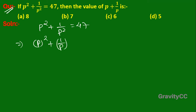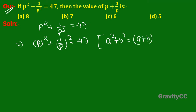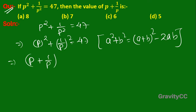We use the identity a squared plus b squared equals a plus b whole square minus 2ab. So p plus 1 upon p whole square minus 2 into p into 1 upon p equals 47. The p's cancel out.